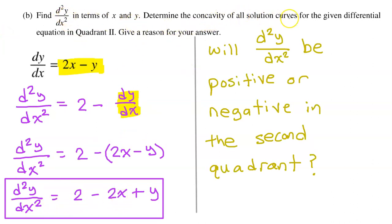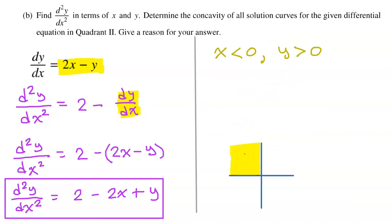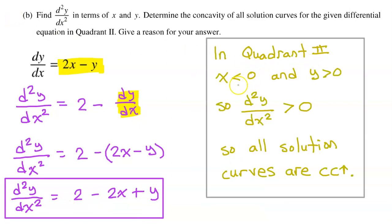To determine the concavity of all solution curves in the second quadrant, we need to ask whether the second derivative will be positive or negative there. In quadrant 2, x is negative and y is positive. If x is negative, the middle term gives us negative 2 times a negative number, which is positive. Since y is positive, the third term is also positive, and the constant 2 is positive. So the second derivative is always positive in quadrant 2, meaning all solution curves are concave up.